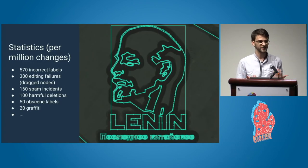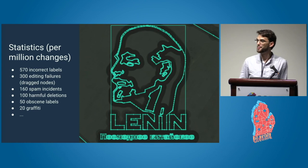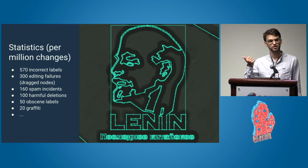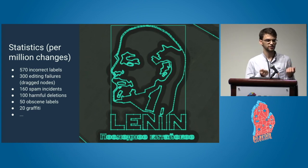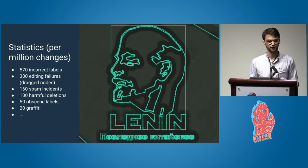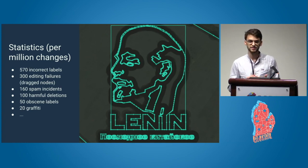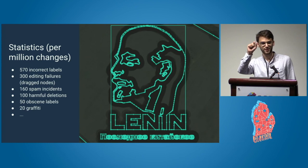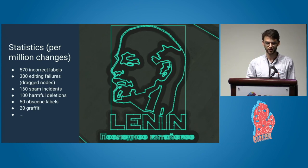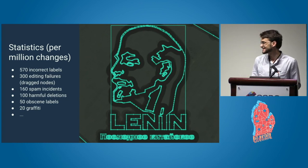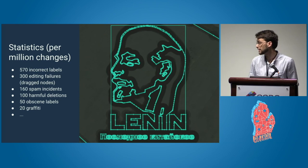To give some ideas of what kind of things we see — this is per one million changes — most of it is labels that are incorrect. That could be a city name that has an email address in it, for example. The next most frequent case is editing errors: when you map a way and you take that node, it slips and ends up across the other side of the globe. That's the second most frequent use case.